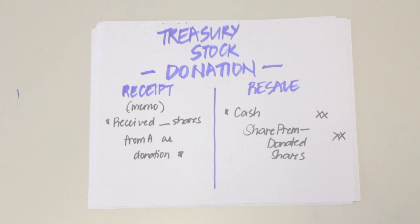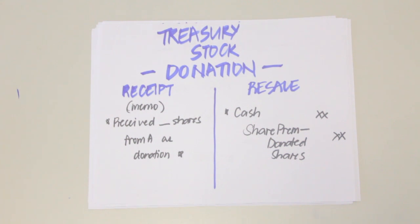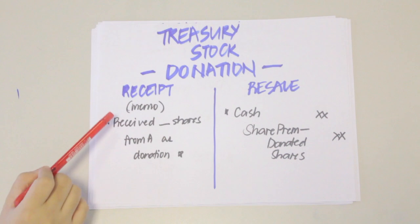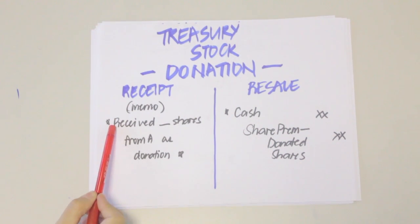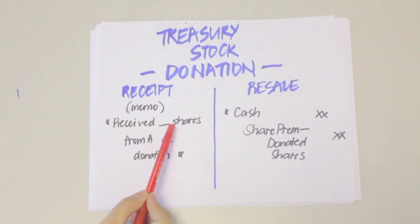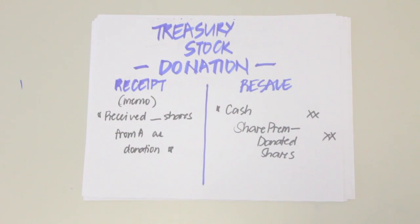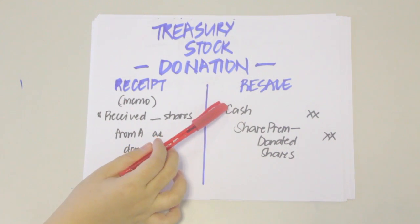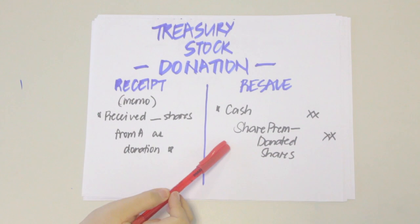Contributions, including stock of the corporation received from shareholders, shall be recorded at the fair value of the items received, with a credit going to Share Premium – Donated Stocks account. No journal entry is necessary to record the receipt of donated shares; rather, we simply make a memo entry such as: 'Received [number] shares from [donor] as donation.' To record the subsequent sale of donated shares, we debit Cash for the amount received and credit Share Premium – Donated Shares for the same amount.